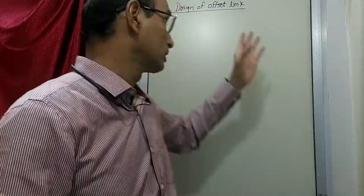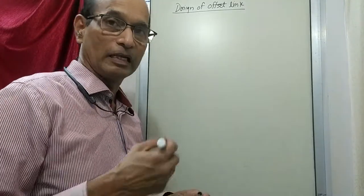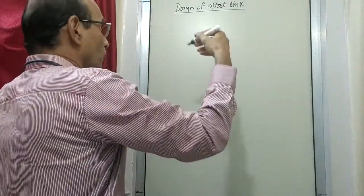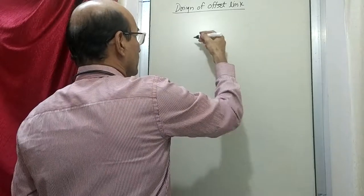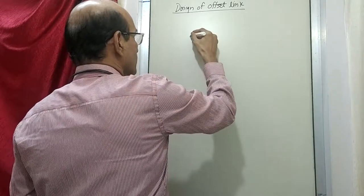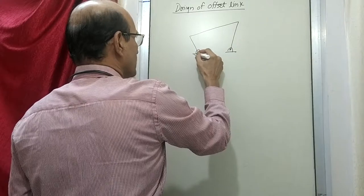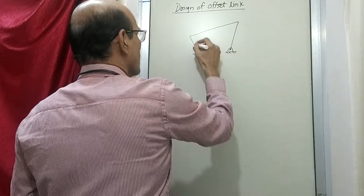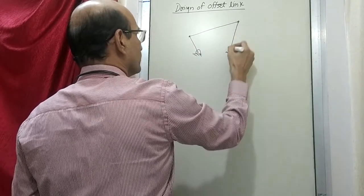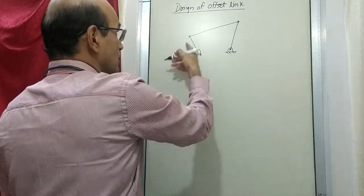We have already earlier learnt C-Frames, how to design C-Frames. And this particular object, offset link, is also of that same type. First of all, what is an offset link - let us try to find out. We have already learnt during the study of mechanisms, we have drawn some such mechanisms. That time we came across what is called a link. As you know, there are four different links here.